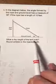Problem number 6. In the diagram below, the angle formed by the rope and ground level has a measure of 36 degrees. If the rope has a length of 15 feet, what is the height of the tent pole?